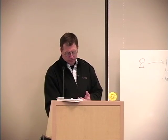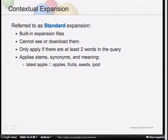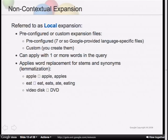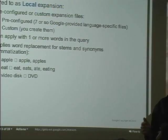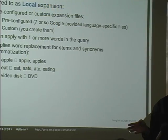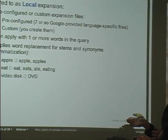The standard expansion includes some stems and analyzes context and meaning. The local expansion is the non-contextual simple replacement, and there are two types. There are pre-configured or custom expansion files already uploaded - they come in seven different languages and are installed in the GSA. You can enable or disable them, and you can download and look at them.